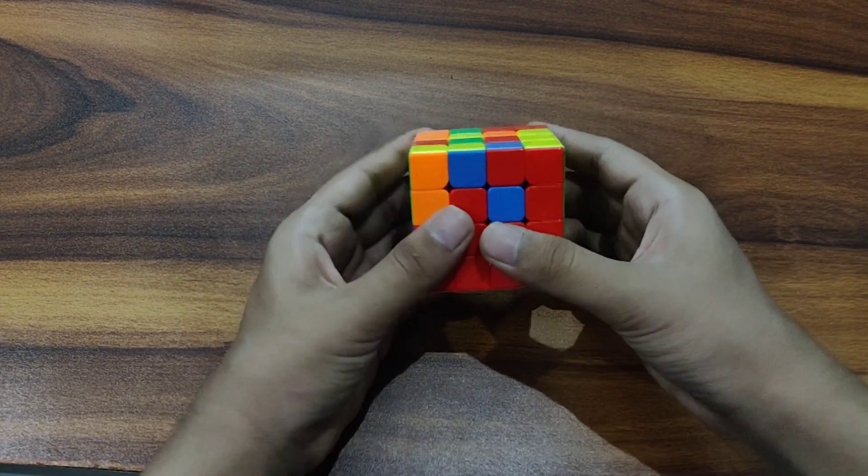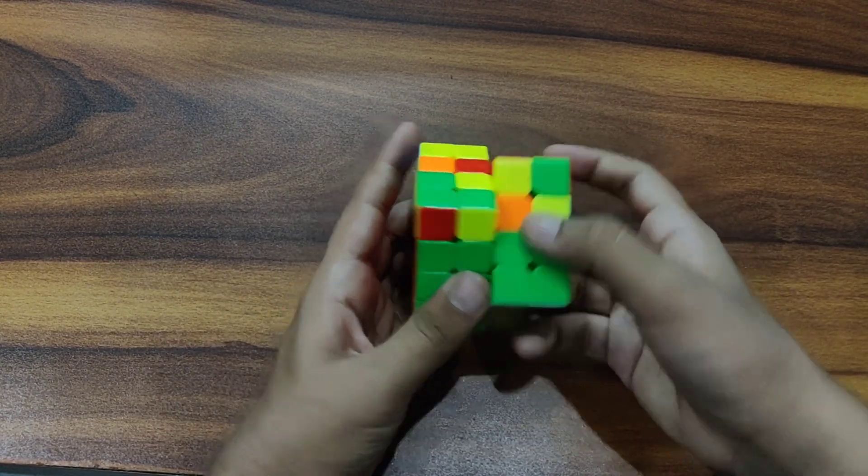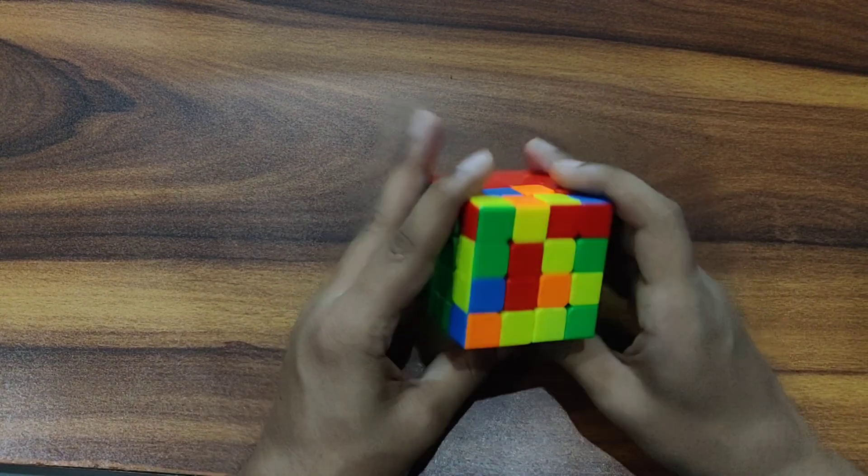But you have to keep in mind that you have to do it from the area where there are two slots empty for these two pieces. So you will move it away, bring it back and insert it. Same way here, insert it. Now we have solved the four edges.